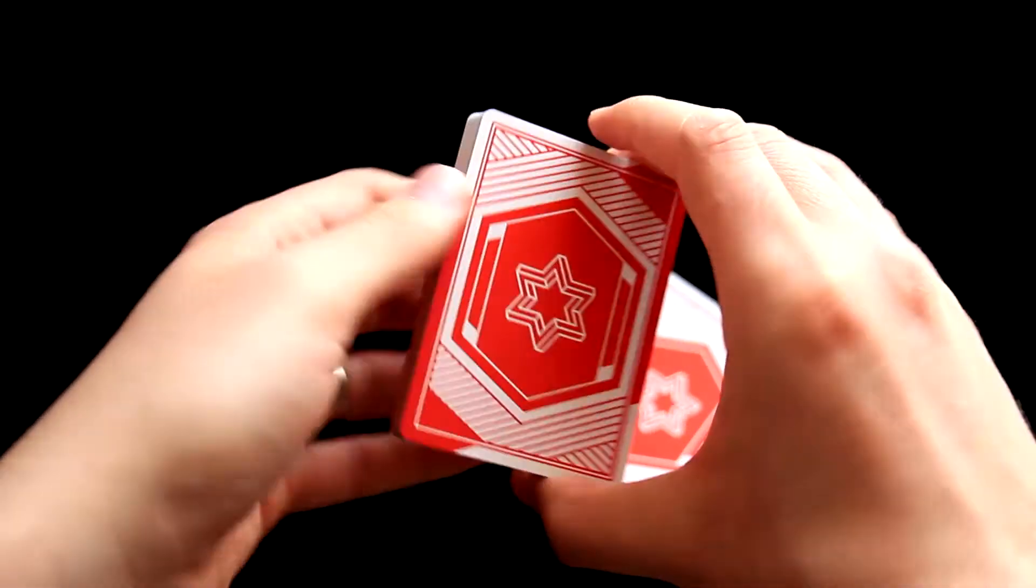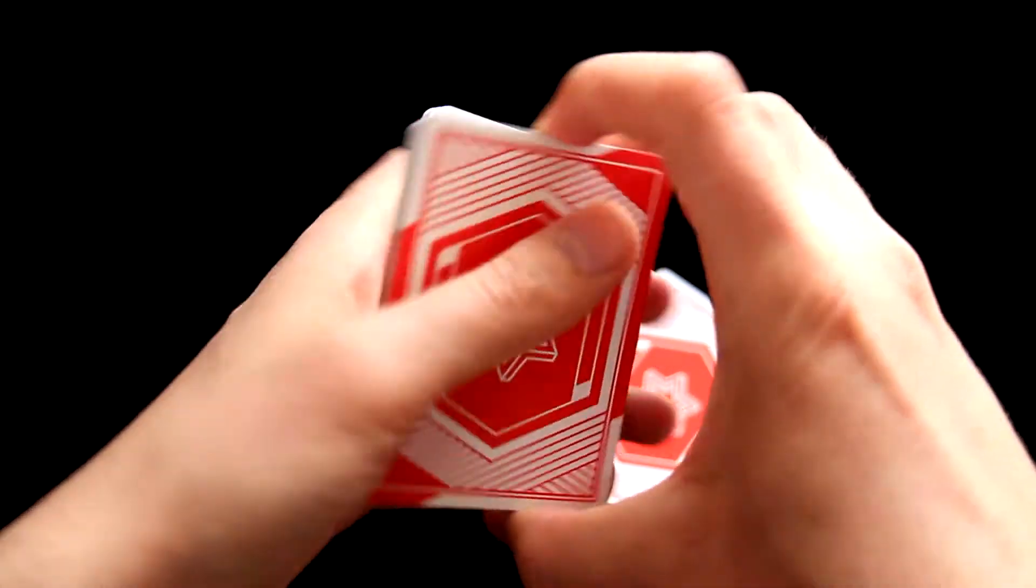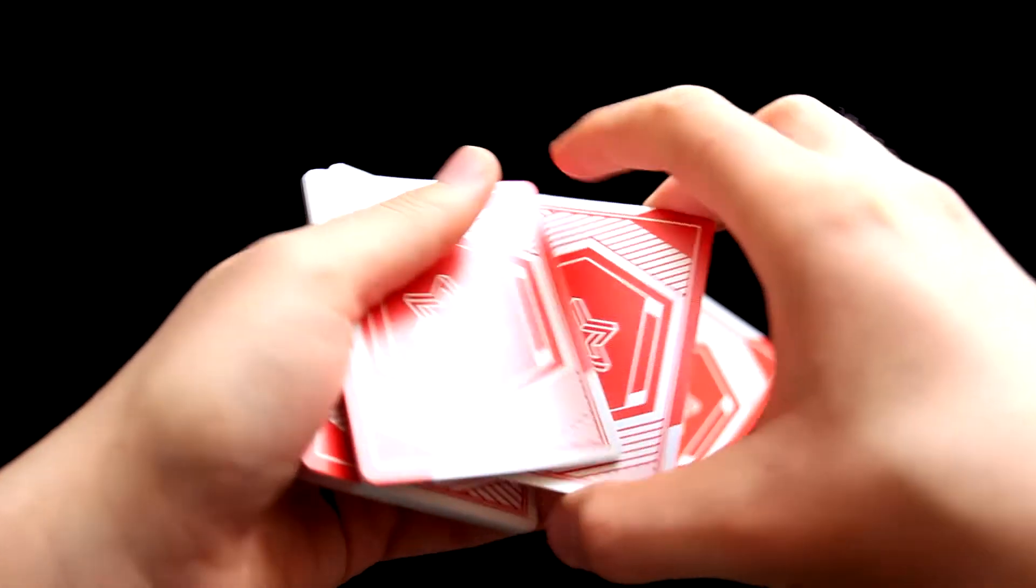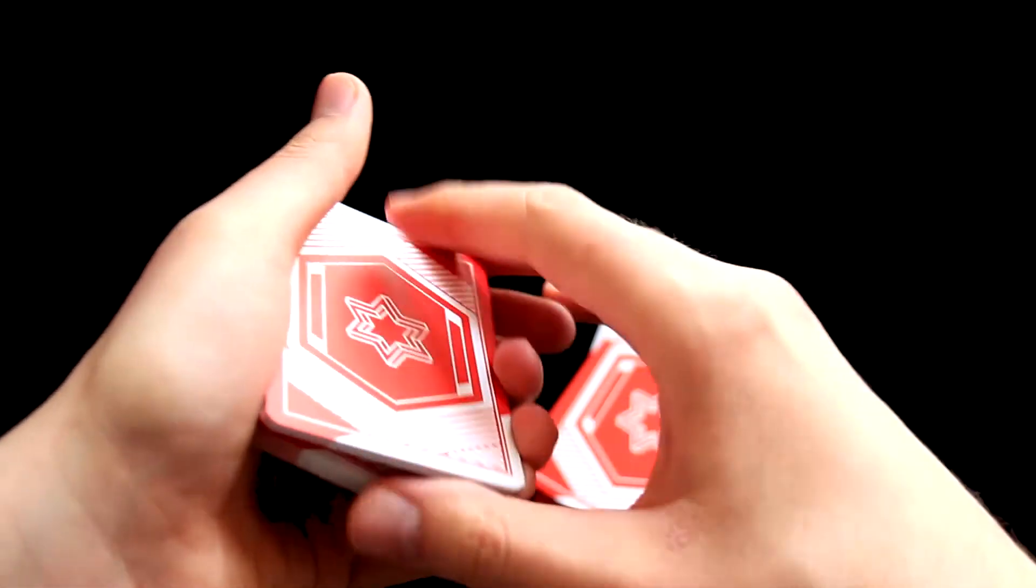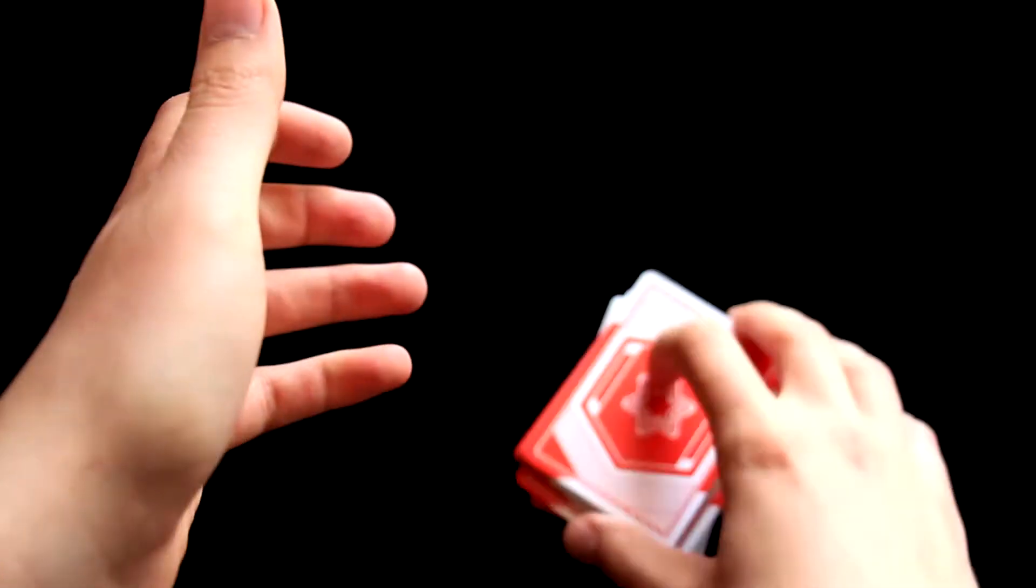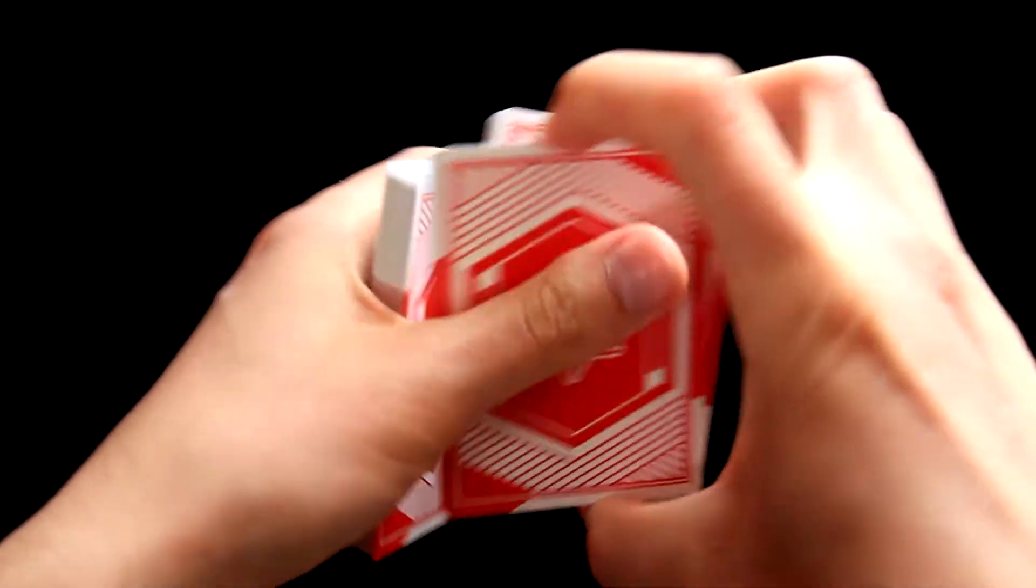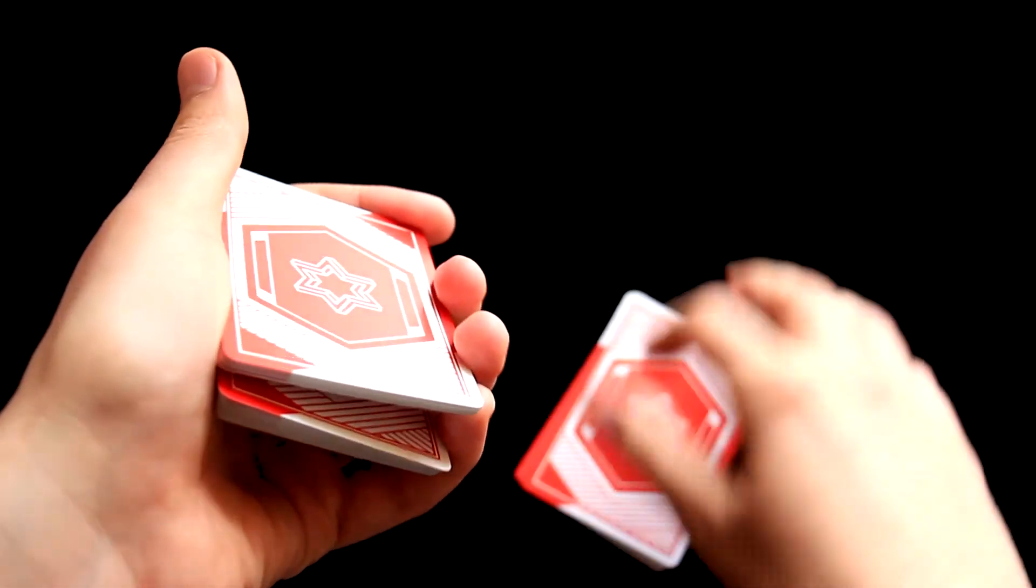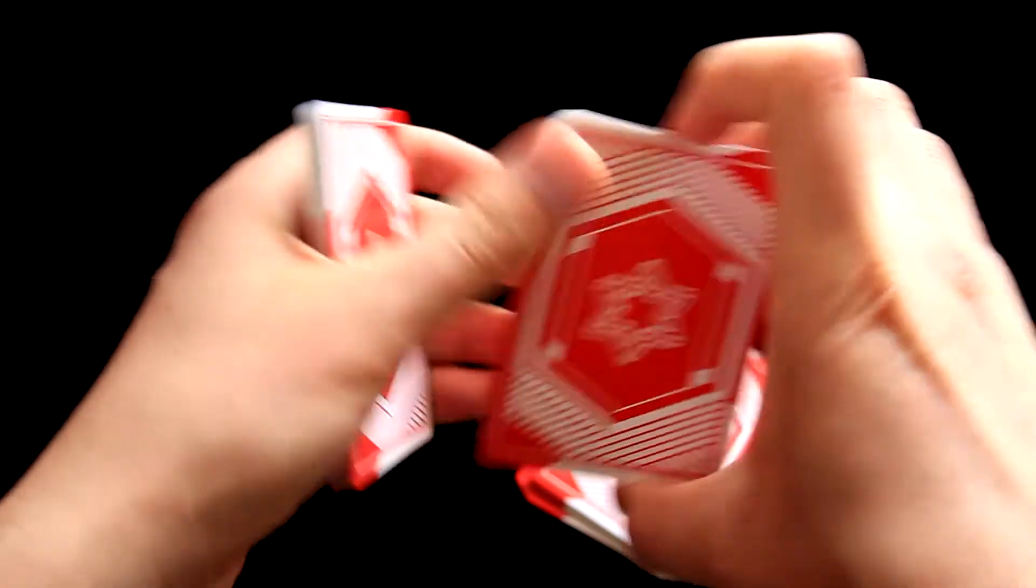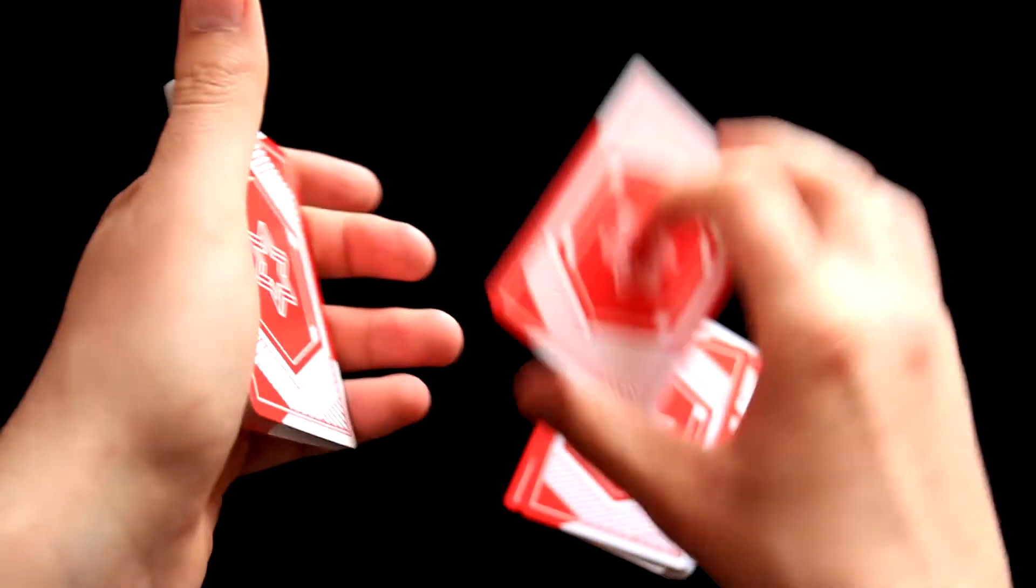But now you will not place all cards on top. Instead, you will do this false cut exactly the same again like this. So really easy, one more time. Do exactly the same at the beginning, and now do once again exactly the same shuffle.